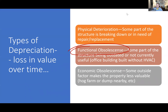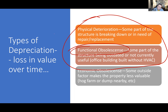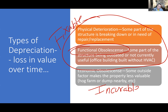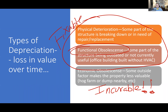Physical deterioration and functional obsolescence can go together in one sense: the property owner can fix both if they want to. It might be expensive, but they're fixable. That building with no air conditioning? You can put air in. That five-bedroom, one-bathroom house? You can add another bathroom. Economic obsolescence, however, is what we call incurable — because you cannot control what other people do with their land. You can't force your neighbors to stop operating the pulp mill.